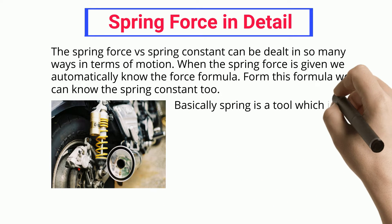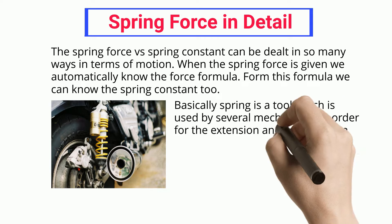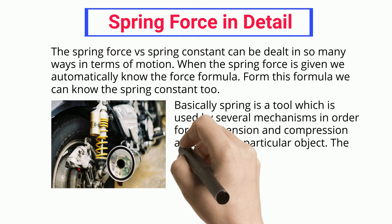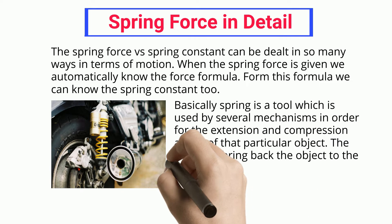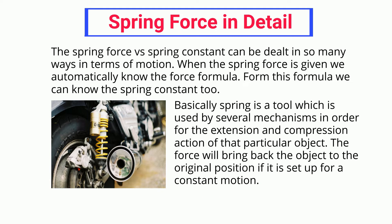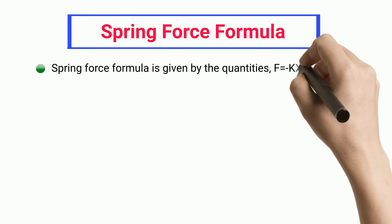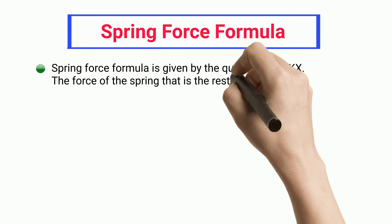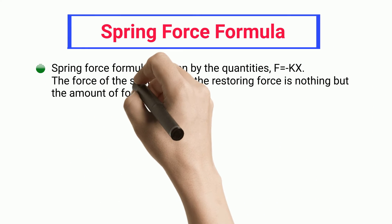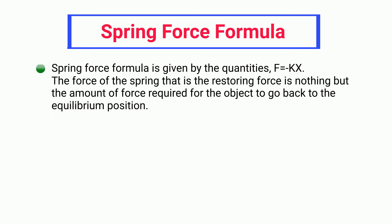A spring is a tool used by several mechanisms for extension and compression of an object. The force will bring the object back to its original position when set in motion. The spring force formula is given by F equals kx, where the restoring force is the amount of force required for the object to return to the equilibrium position.